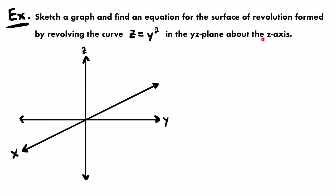In our example, we are revolving around the z-axis. That tells us we want our radius function or our generating curve to be in terms of z — some other variable equal to an expression of z. The curve we've been given is z equals y squared in the yz-plane. So we need to solve for the other variable, y. Taking the square root of both sides gives us y equals the square root of z. That would be our radius function r of z for this surface of revolution.